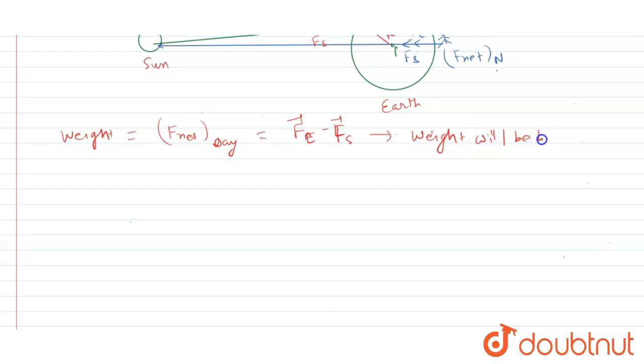F_net in night, F_net in night, this can be written as F_s plus F_e. So as a result, the force will increase, effective force will increase on this person in night. So we can say weight will increase.